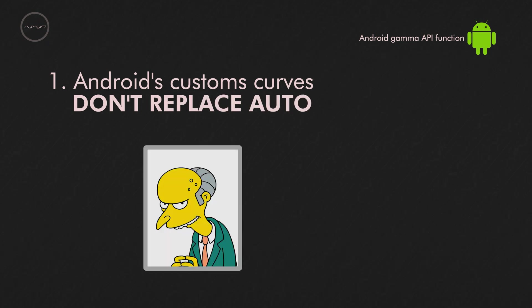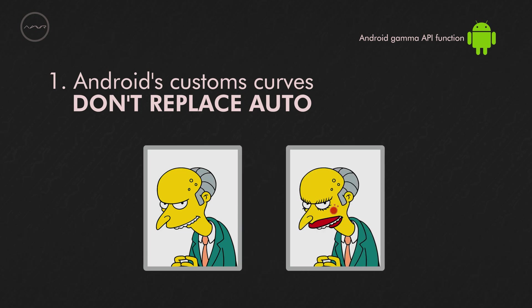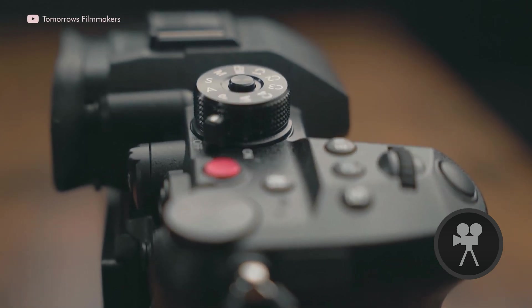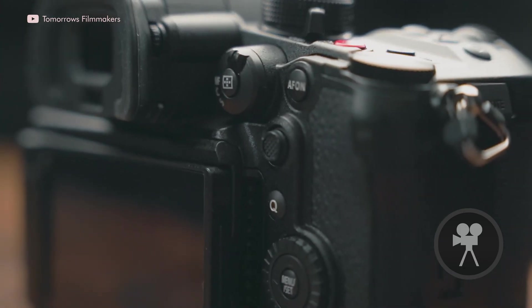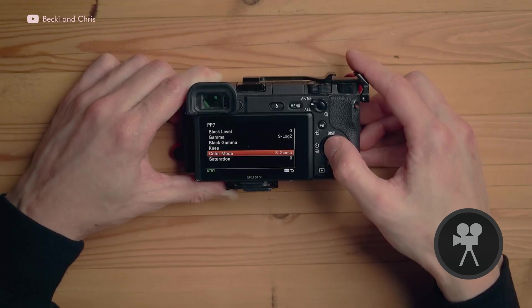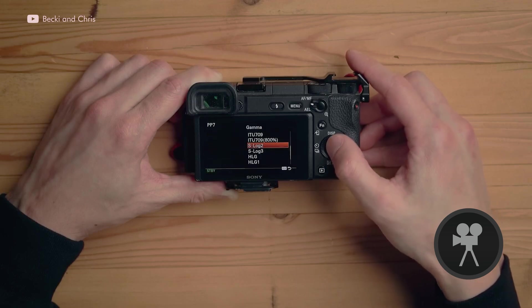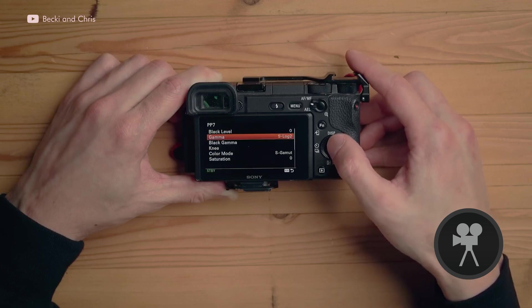It's like bad makeup. Listen. When you're on a dedicated large camera and you set a gamma profile, this will result in replacing the native curve.